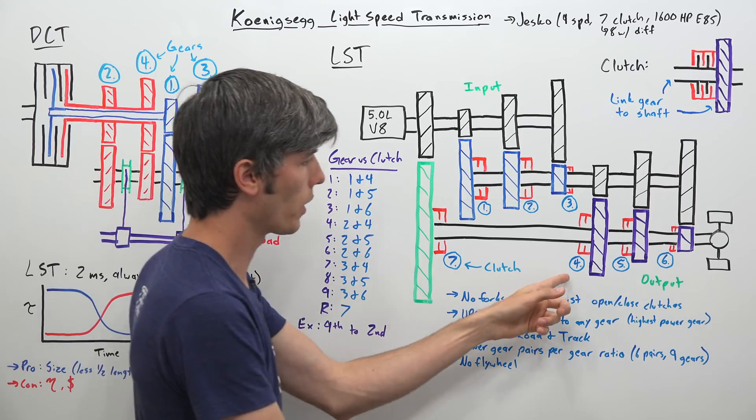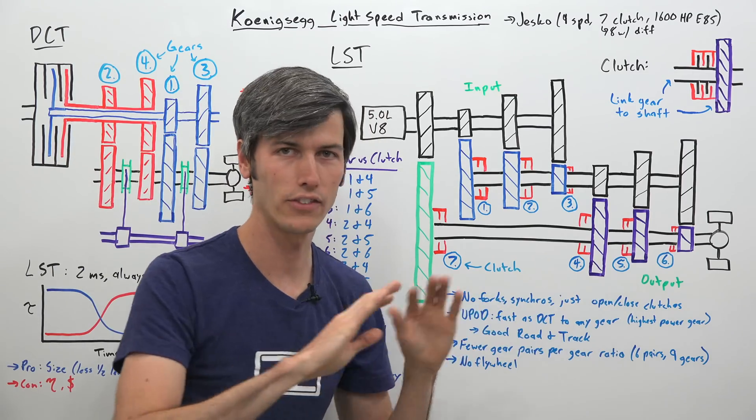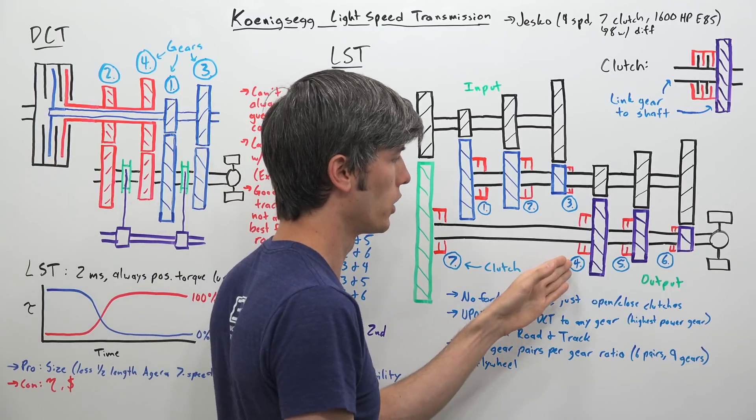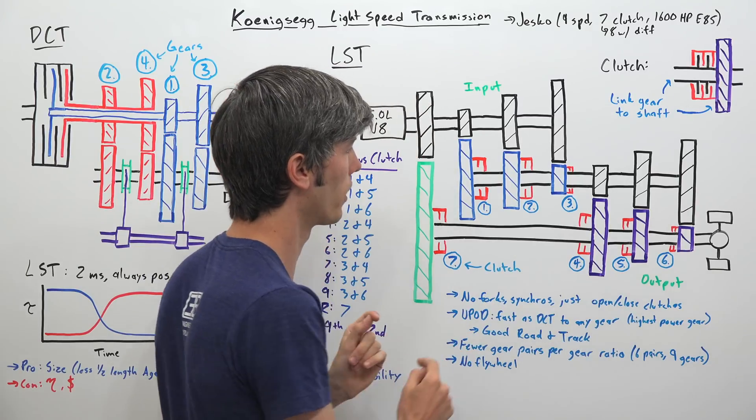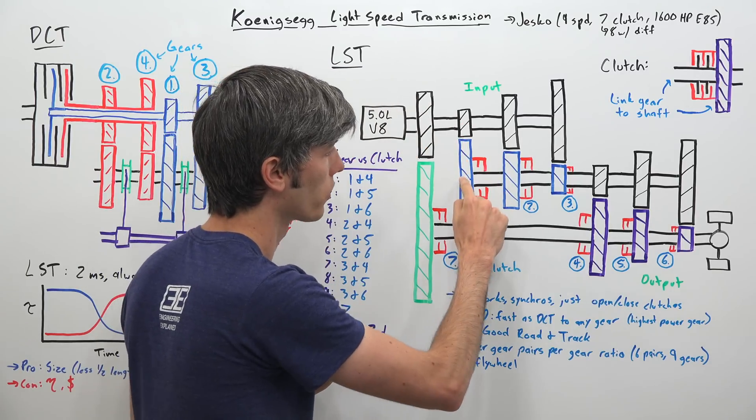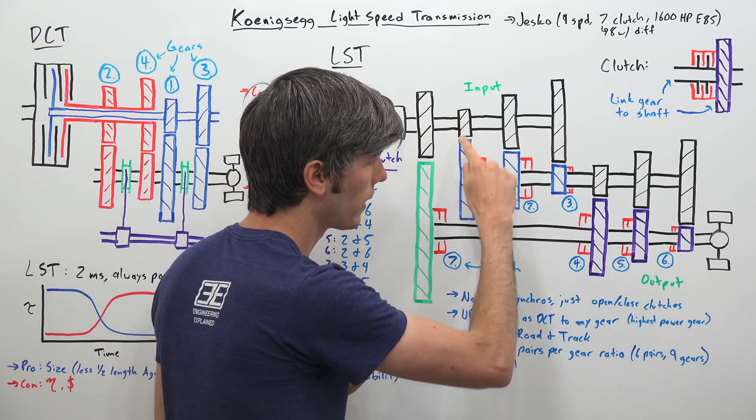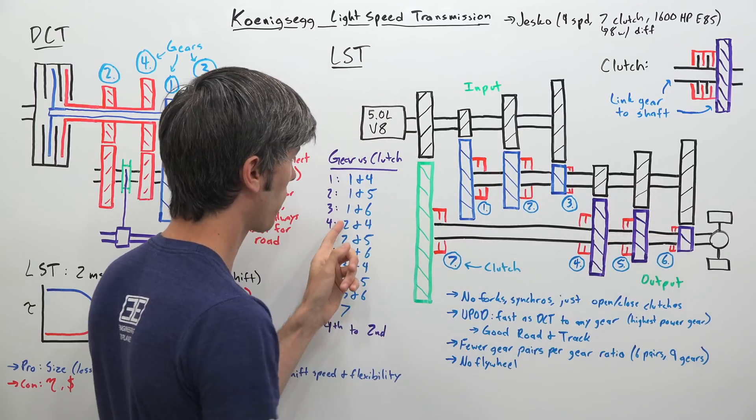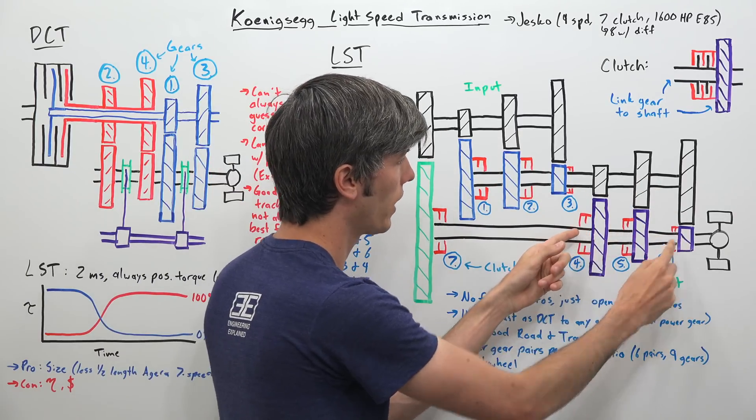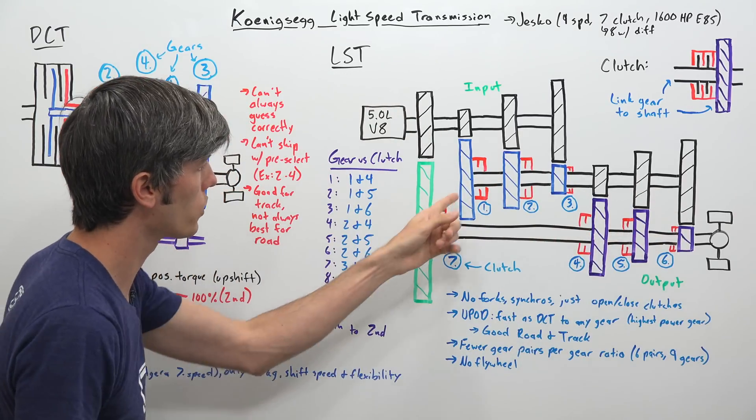For gear number two, we open this and we close this, and that's all that's required for the gear shift. You open one clutch pack, you close another clutch pack. So power comes across from one down to four, instead now down to five. If you want third gear, you do one and now six. And so you can do that for each gear pair.